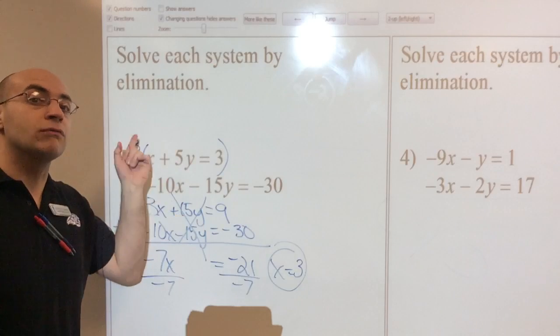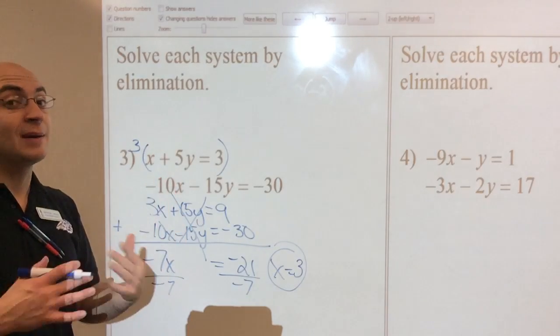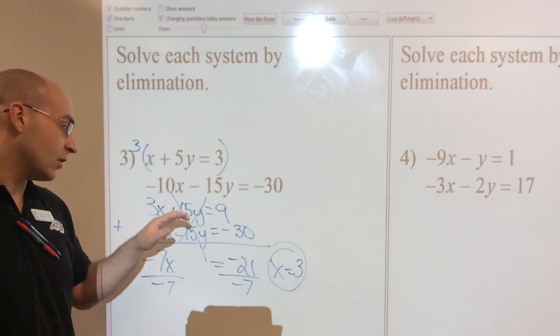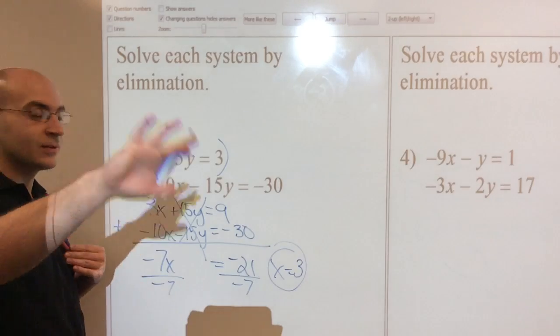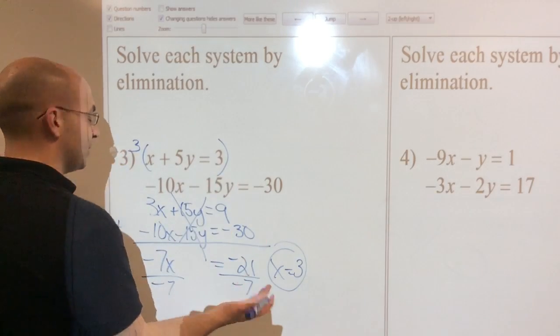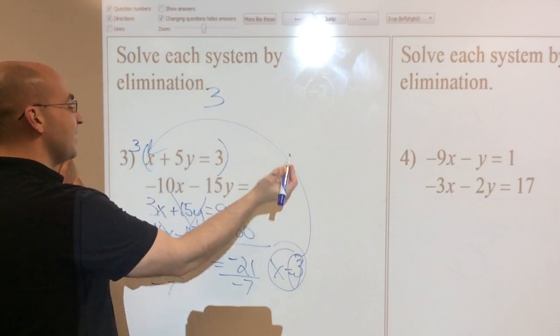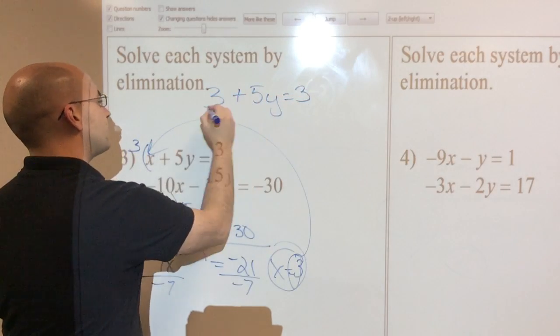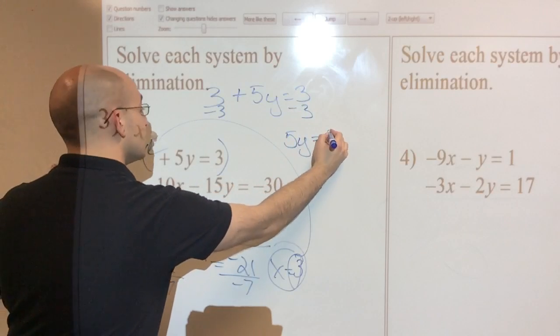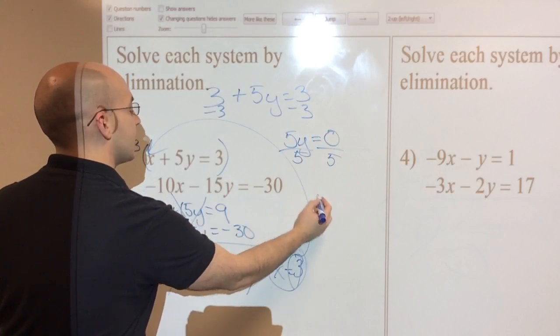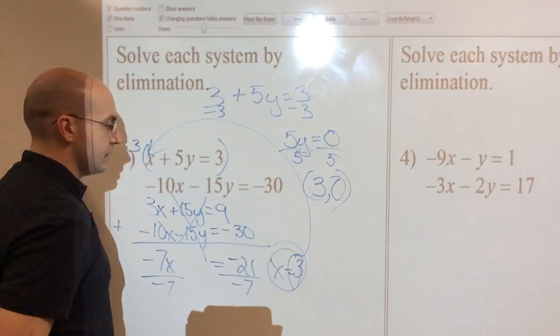Now I'll add down. Because if you change it and plug it into something that changed, you're liable to make a big mistake. This 3 is going to go right here. So 3 plus 5y equals 3. Minus 3 and minus 3. I'm left with 5y. It's going to equal 0, which is fine. The only thing that y can be is 0. So my answer is the x value is 3. The y value is 0. And I'm done.